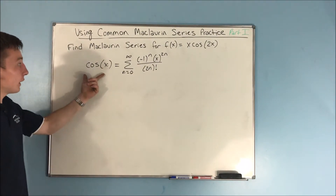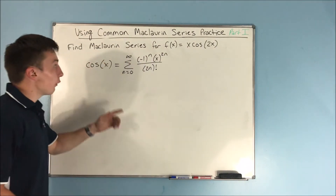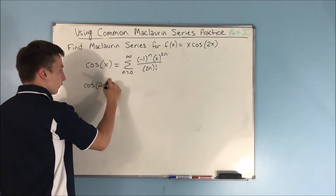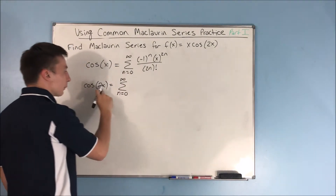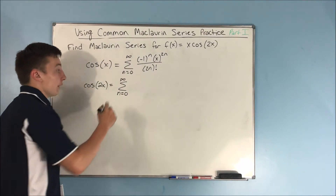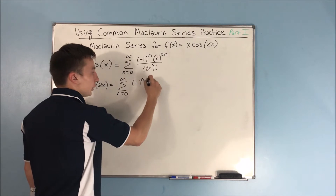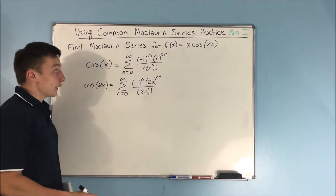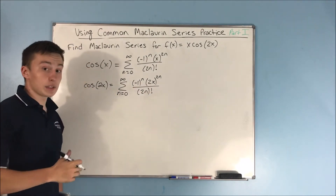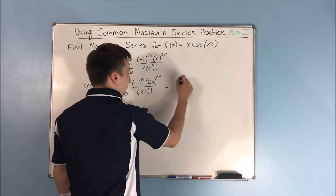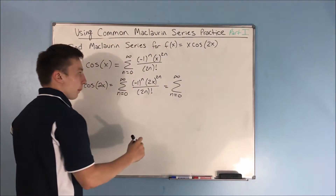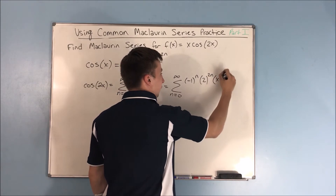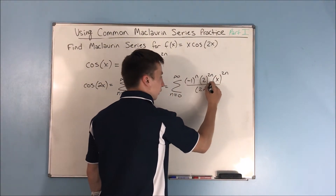Now, if we make this cosine of 2x, we're going to take this one step at a time. Cosine of 2x is going to equal the sum from n=0 to infinity — we just put 2x wherever we see an x. We get (-1)^n times (2x)^(2n) over (2n)!. Since we're going to be multiplying by an x, it would be nice if the 2 and the x were separated, so we get the sum of (-1)^n times 2^(2n) times x^(2n) over (2n)!.